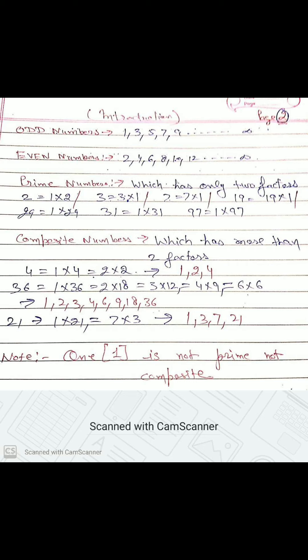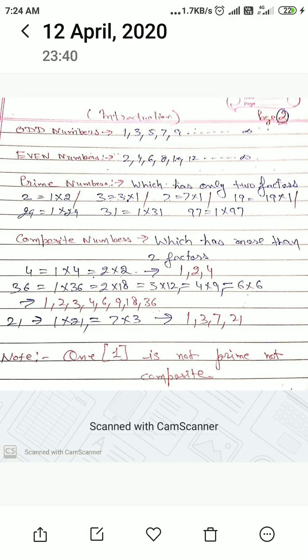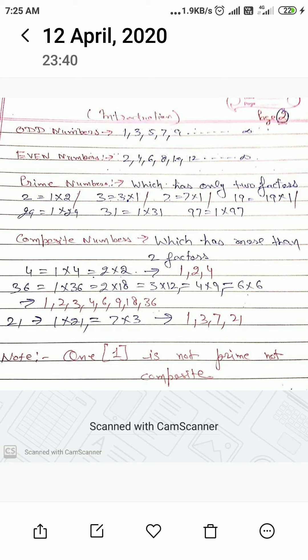Similarly, 36: one into 36, two into 18, three into 12, four into 9, six into 6. We will get factors of 36: one, two, three, four, six, nine, 12, 18, 36. More than two factors, so it is composite number.